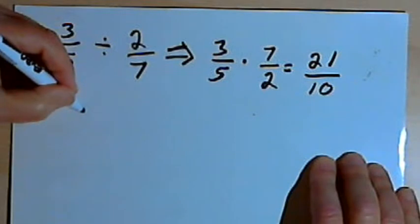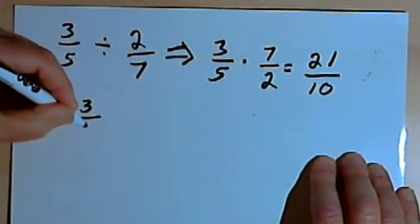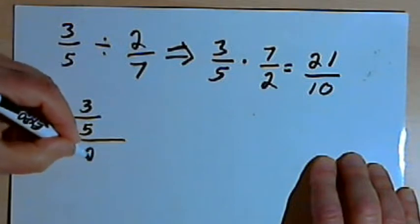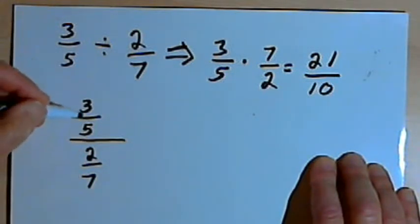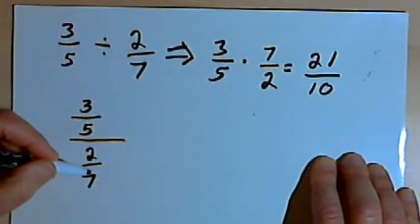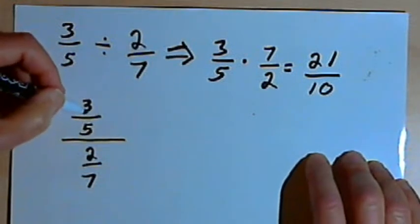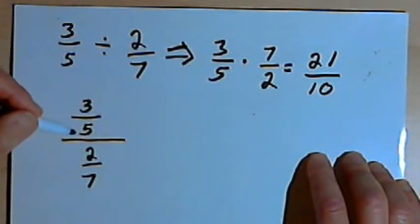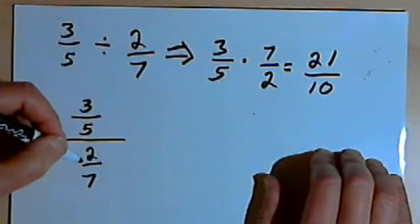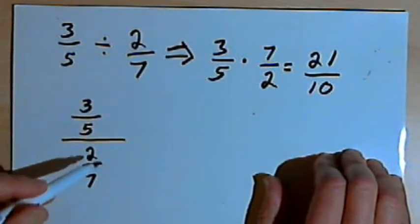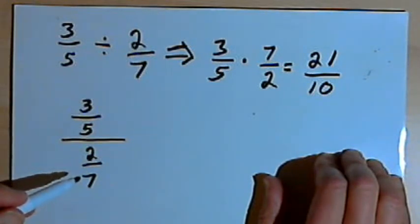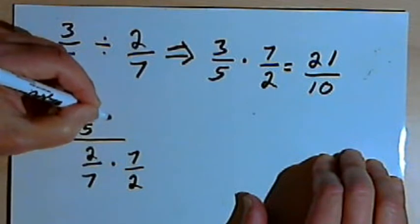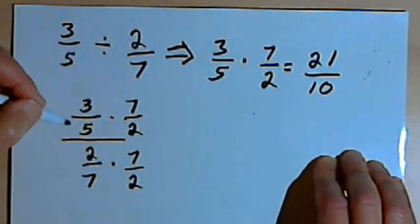I'm going to rewrite the division problem as one big fraction. The numerator of the fraction is going to be 3 over 5, and the denominator of the fraction is going to be 2 over 7 — which is another way of saying 3 over 5 divided by 2 over 7. Now I can multiply both the numerator and the denominator of any fraction by the same number and not change its value. So I'm going to multiply both by the reciprocal of the denominator. The denominator is 2 over 7, so its reciprocal is 7 over 2 — I'm flipping that 2 over 7 into 7 over 2.